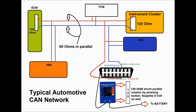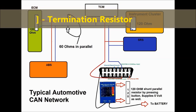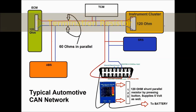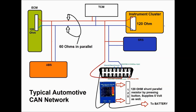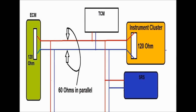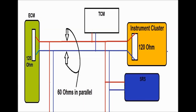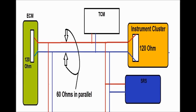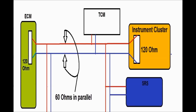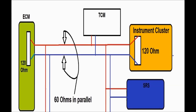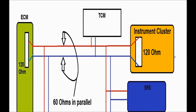This is what a CAN network has to look like — they're all the same; the only thing that changes is the amount of modules. Here you see the instrument cluster, transmission control module, ACM, and ABS module. You have to have two termination resistors. Between the two 120 ohm termination resistors in parallel you'll have 60 ohms. If you measure pins number 6 and 14, you'll get 60 ohms, give or take a couple — usually 60, 62, 63, or 58 ohms.